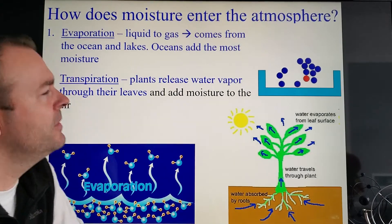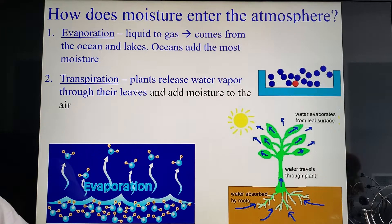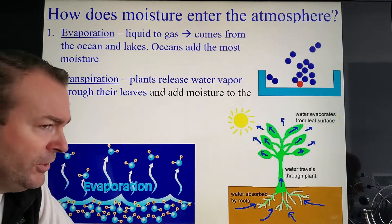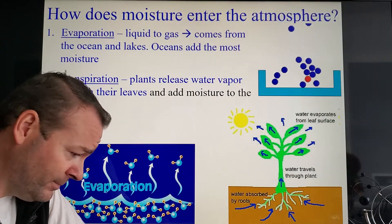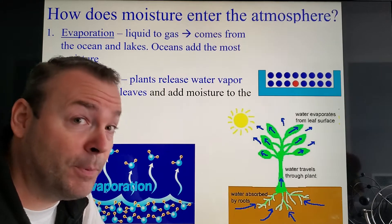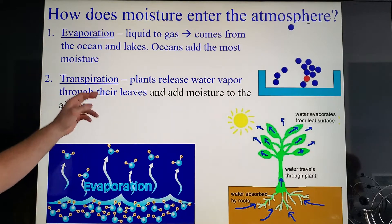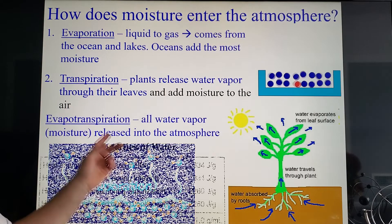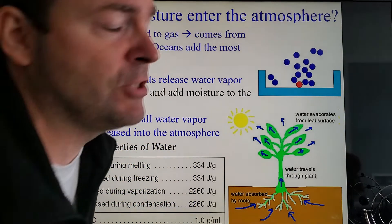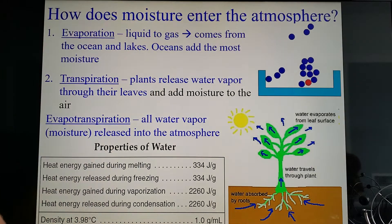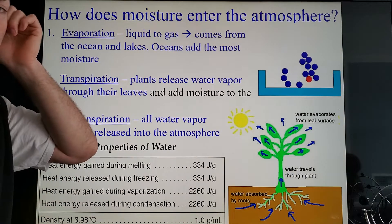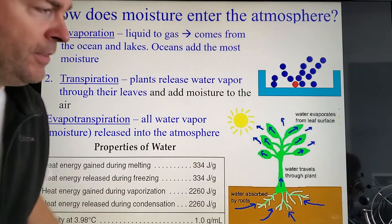And then of course there's this word which maybe some of you remember from biology if you took it. If not, it's called transpiration, and that's when plants release moisture to the air, similar to a human perspiring, a plant transpires. Put those two terms together and of course you get this monster word right here: evapotranspiration. And that is all of the water vapor released in the atmosphere from both living and non-living things.